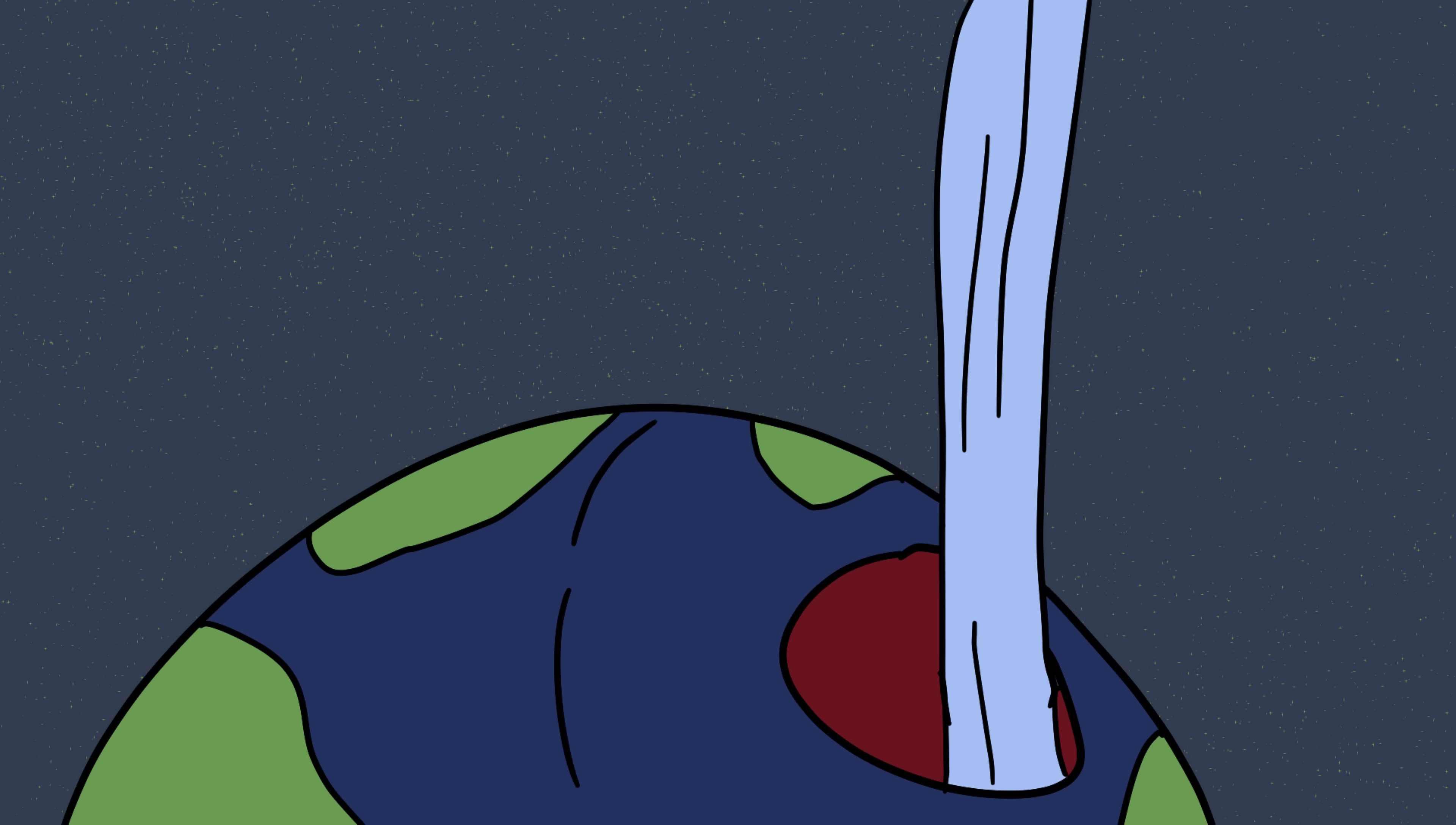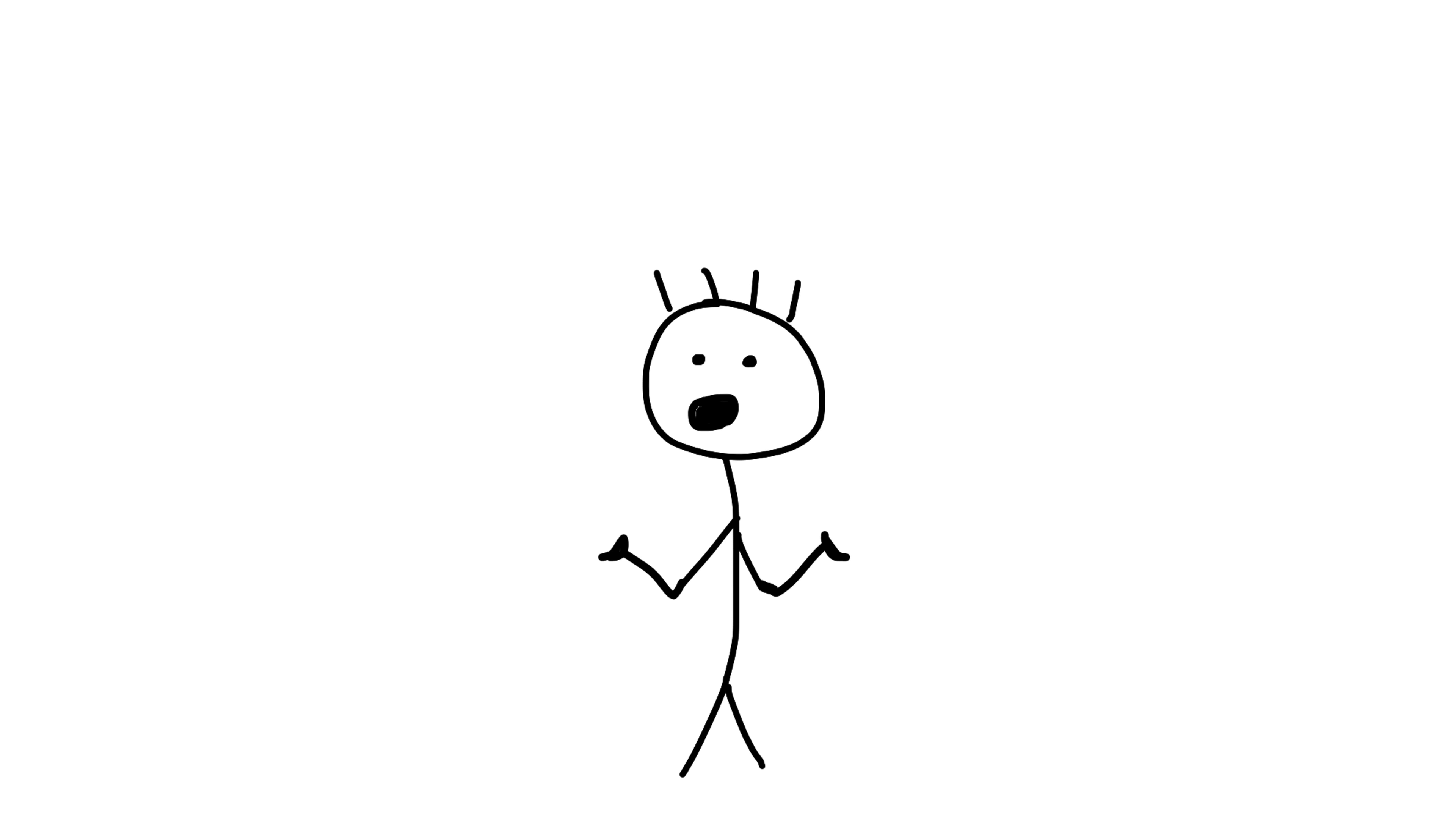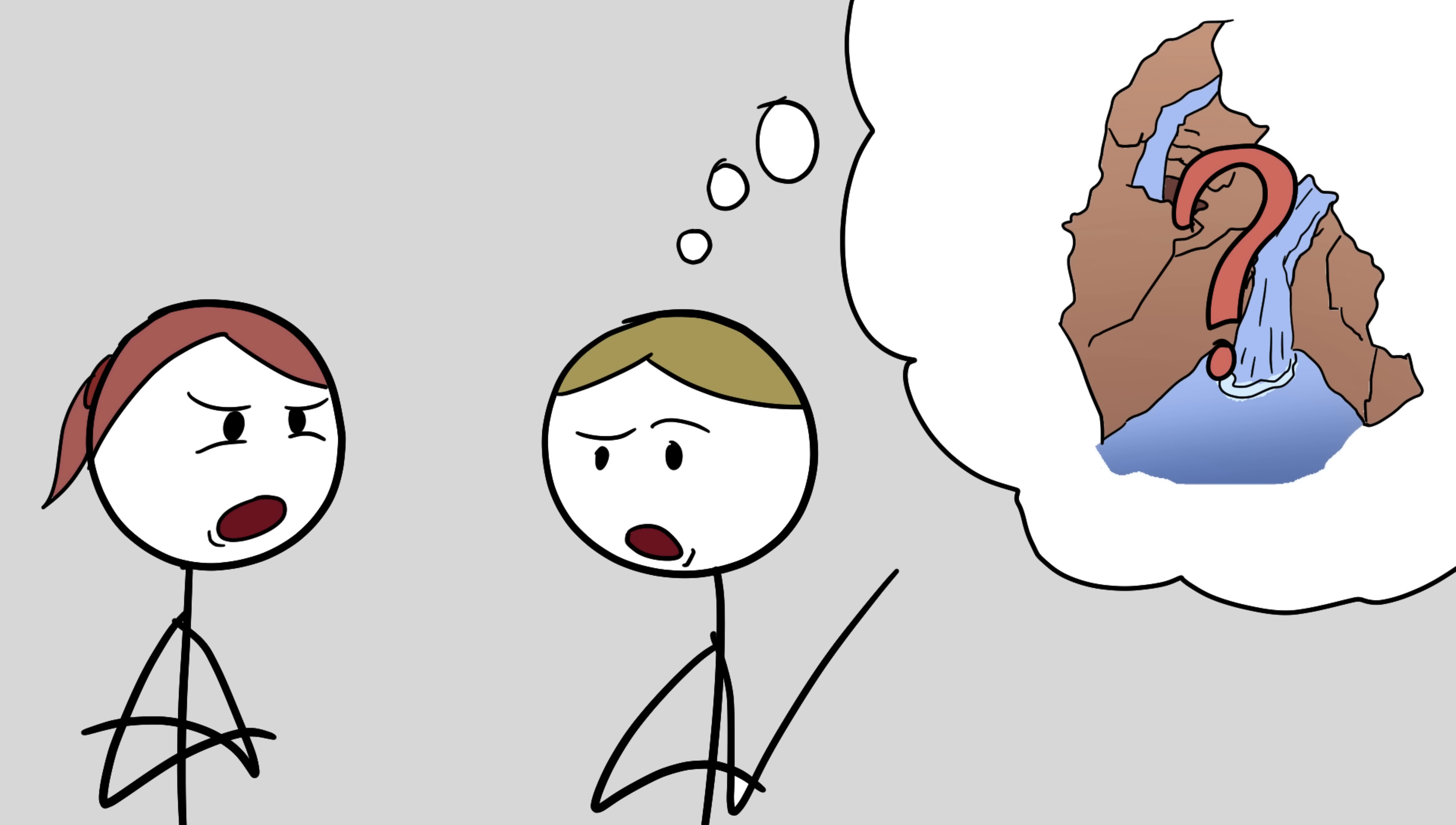For years, wild theories spread. Some claimed it was a direct tunnel to the center of the earth. Others thought it drained into a massive underground cave system, or even resurfaced miles away in Lake Superior. The most ridiculous suggestion? That it might flow into another dimension entirely. In 2016, geologists did a more careful study and concluded that the missing water probably just rejoins the river through hidden cracks in the rock. But since no one has actually seen the water come out, the Devil's Kettle keeps its aura of mystery.